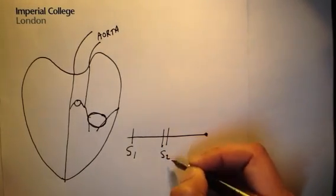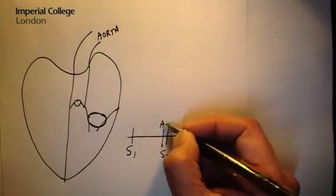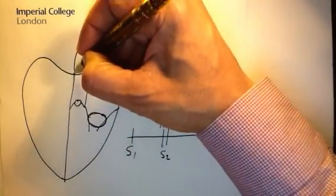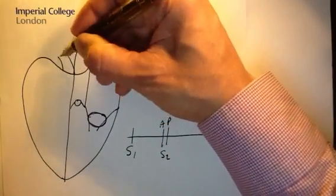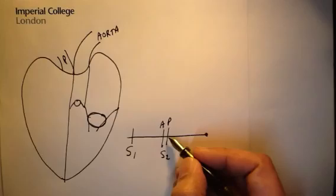And the second heart sound is split with the aortic valve and the pulmonary valve, because the pulmonary valve has got a lower pressure here. And so you hear the aortic valve closing before the pulmonary valve.